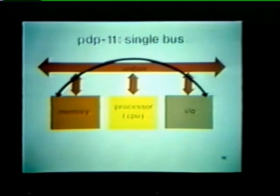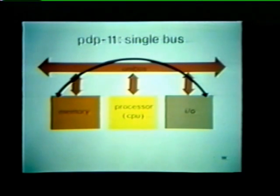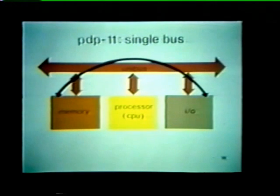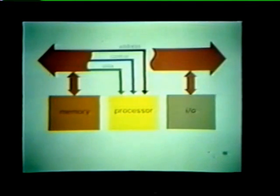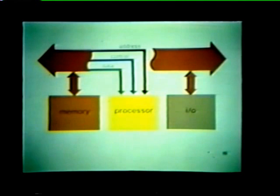Remember that in traditional computer systems, there was no way for an I/O device to deal directly with memory unless an extra bus was added. That extra bus isn't needed in our PDP-11 system. The unibus actually consists of 56 lines, or wires, to handle address, control, and data functions.